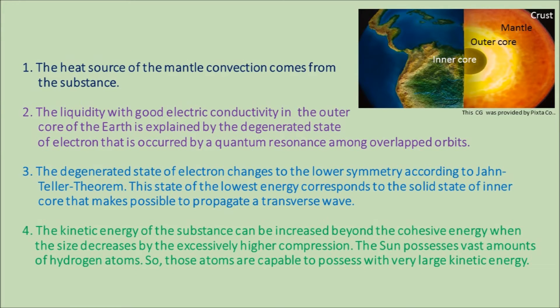The liquidity with good electric conductivity in the outer core of the Earth is explained by the degenerated state of electron, which is produced by a quantum resonance among overlapped orbits. The degenerated state of electron changes to lower symmetry according to the Jahn-Teller theorem. This lowest energy state corresponds to the solid state of the inner core, which makes it possible to propagate a transverse wave.